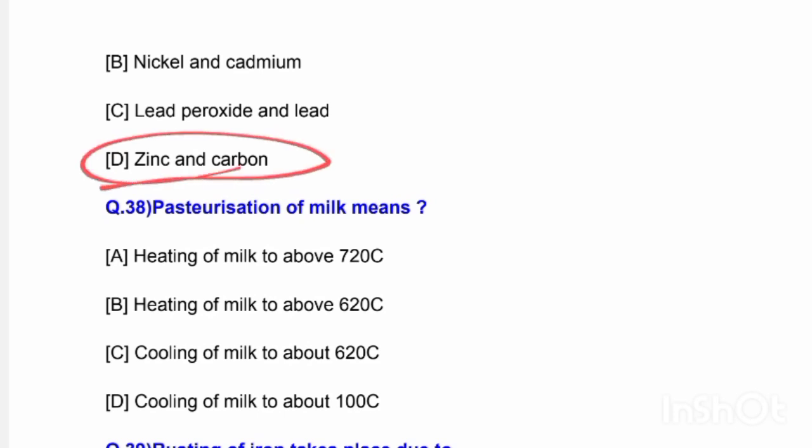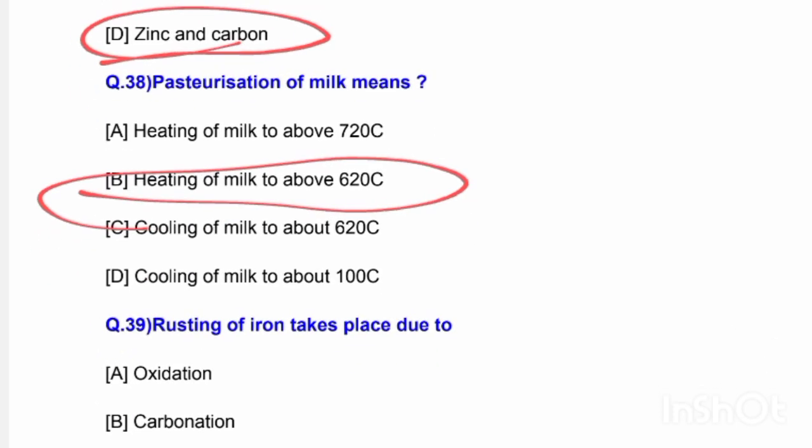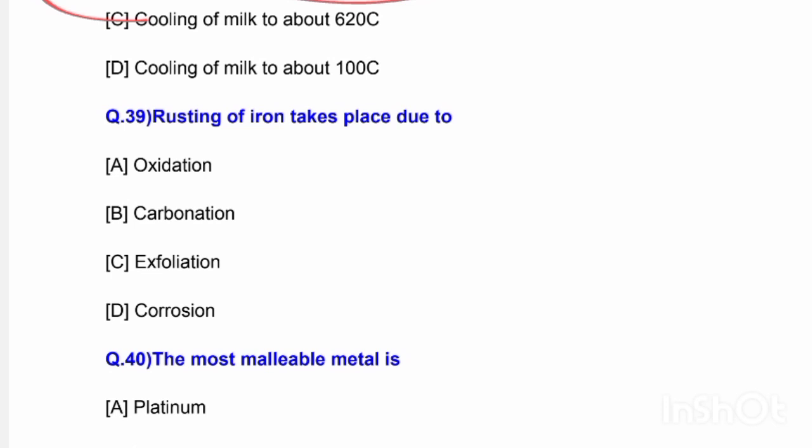Next question: Pasteurization of milk means — options are heating of milk to above 72°C, heating of milk to about 62°C, cooling of oil, and cooling of milk to about 10°C. The correct answer is option B — heating of milk to 62°C.